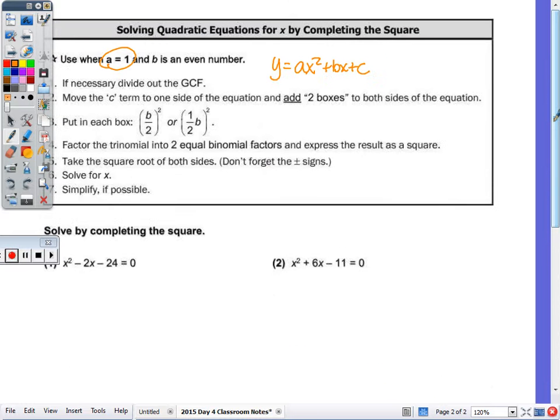Step number 2, move the c term to one side of the equation and add two boxes to both sides of the equation. Now we add it to both to keep the equation balanced. The boxes are placeholders.